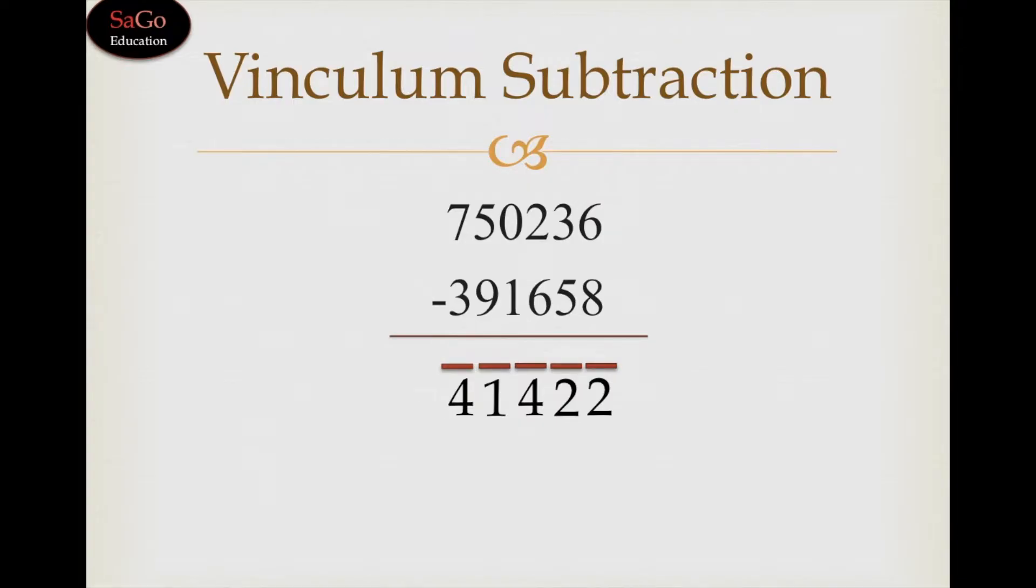Now under a formula of Vedic mathematics we can remove these bars and then we'll be having the answer. That formula is called subtract all digits from 9 and last digit from 10. So this formula we'll apply from right to left. The last digit is 2 bar so we'll subtract the last digit from 10 as per the rule.